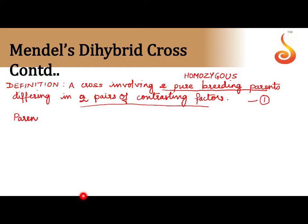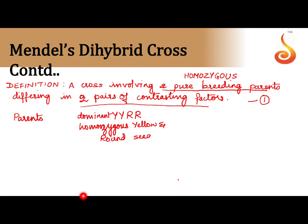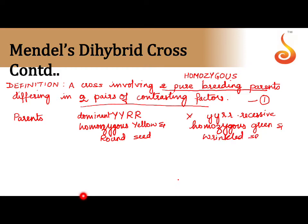First we take parents: capital Y, capital Y, capital R, capital R, which is the dominant parent. It is homozygous and represents yellow and round seed. We cross it with small y, small y, small r, small r, which is recessive but again homozygous — this time it is green and wrinkled seed. Getting the parents right, we then bring down the gametes. Gametes are always haploid; parents are diploid. So you have only capital Y, capital R on one side, and small y, small r on the other.